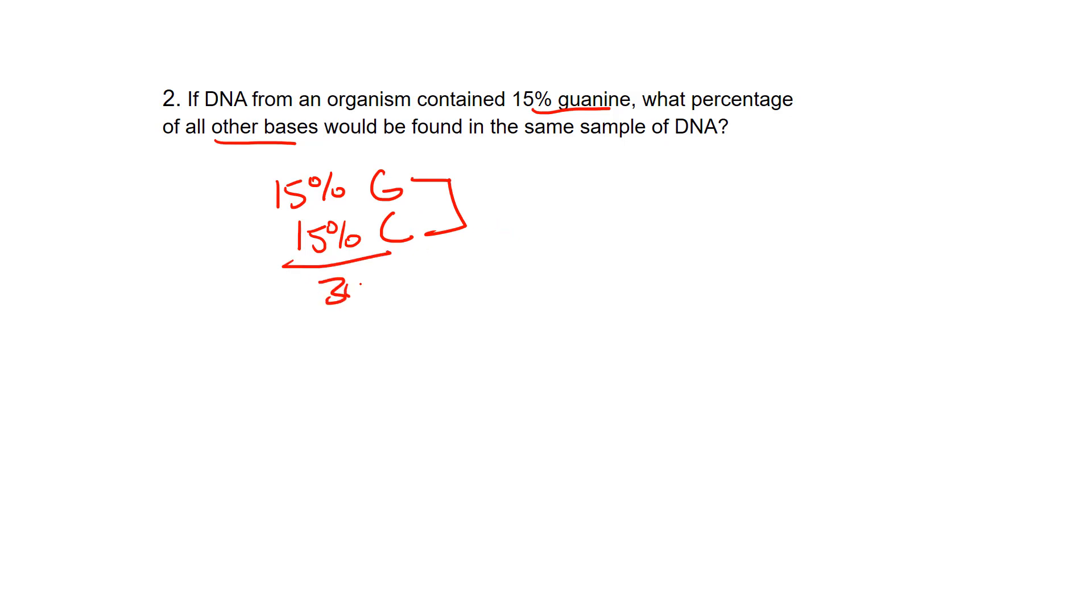That comes up with 30% total for both G and C. If I take 100% and subtract that from 30%, that leaves me with 70% for adenine and thymine.